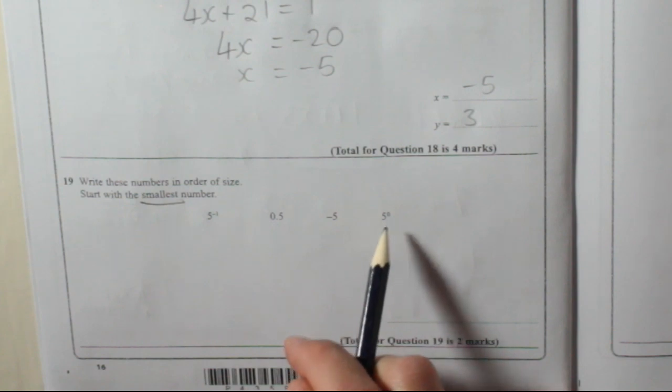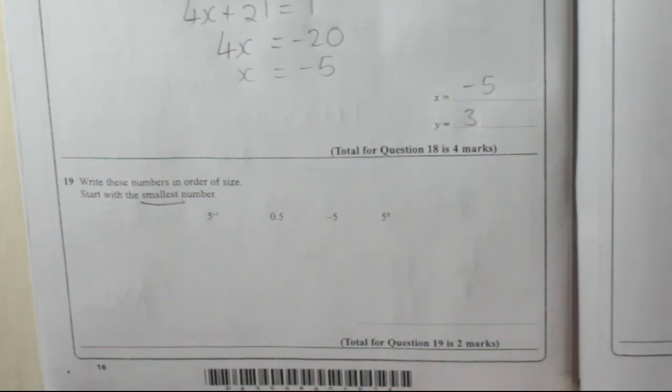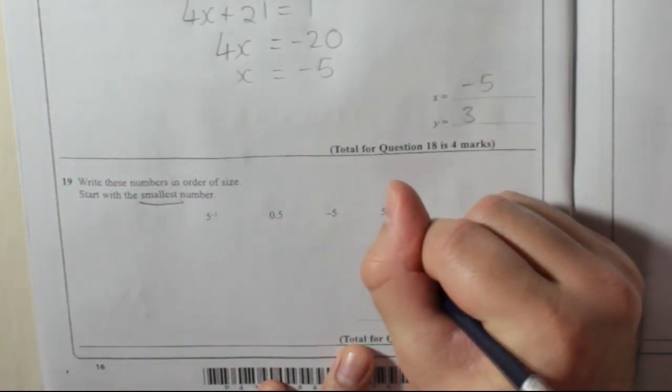5 to the power of 0. Now, you should remember that anything to the power of 0 is 1, so I'm going to write a 1 there.